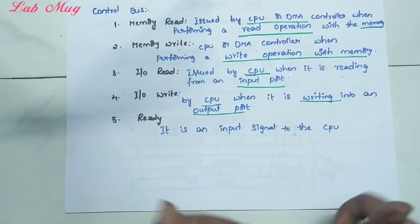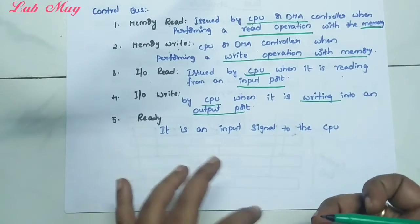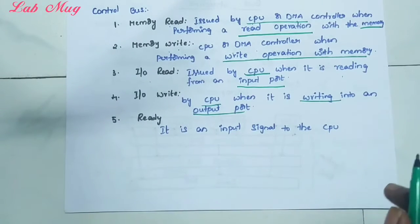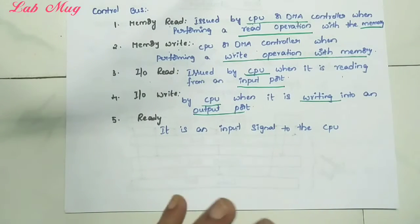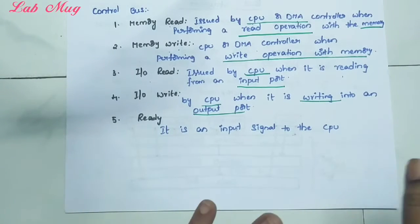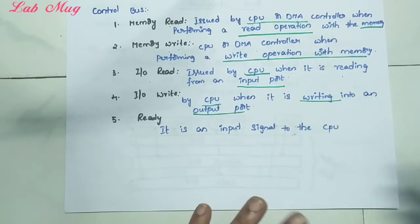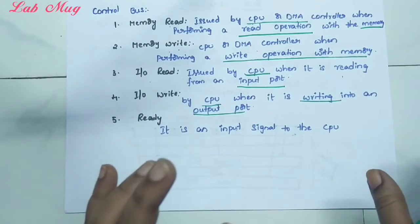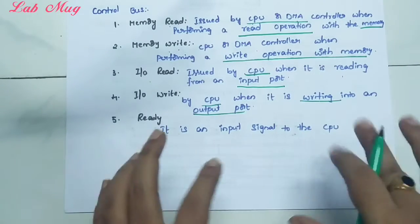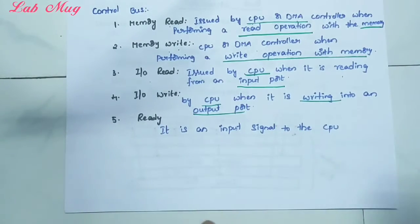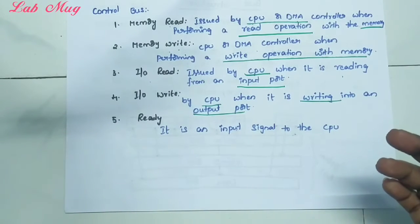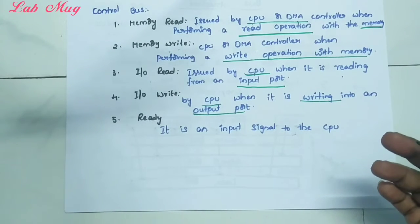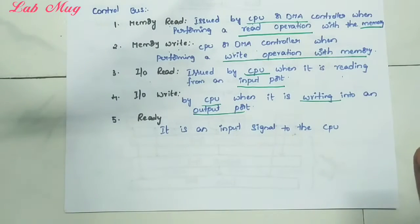Once operations are performed, the device sends a 'ready' signal back to the CPU - meaning 'I am ready.' From whichever device the signal comes, that device sends the CPU the signal 'I am ready to work.' So that is about the ready signal. In summary, the control bus passes all signals from the CPU or DMA to memory and input devices to control all operations.